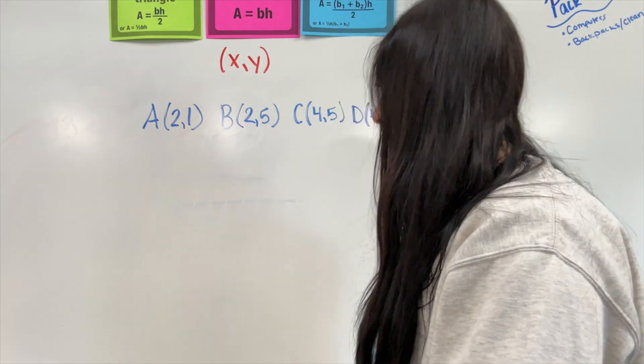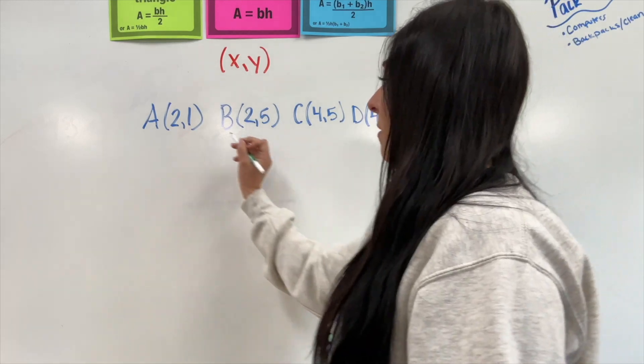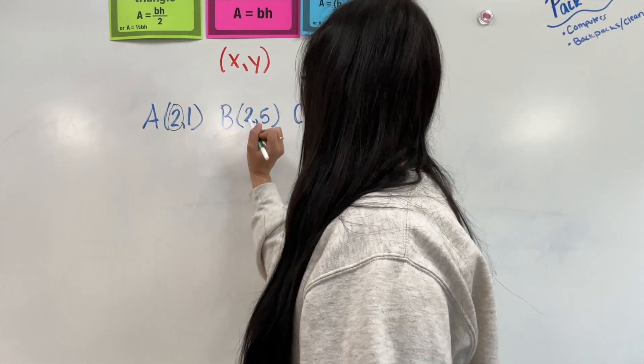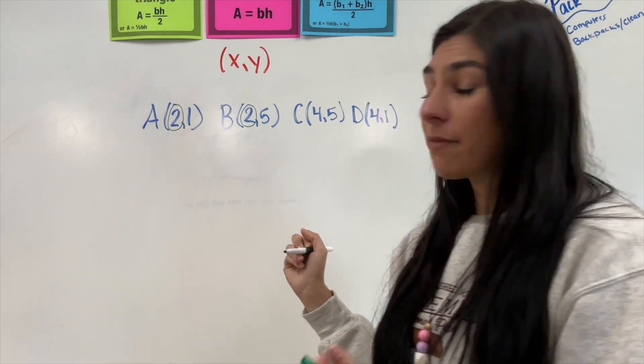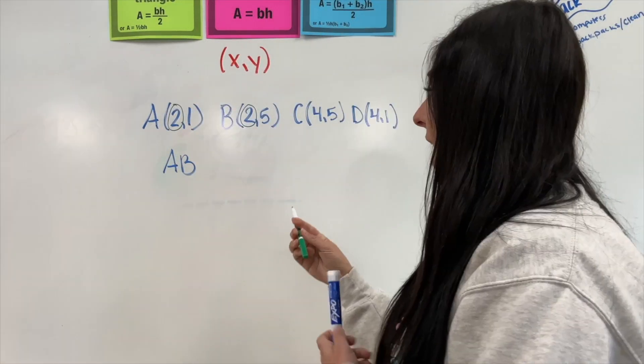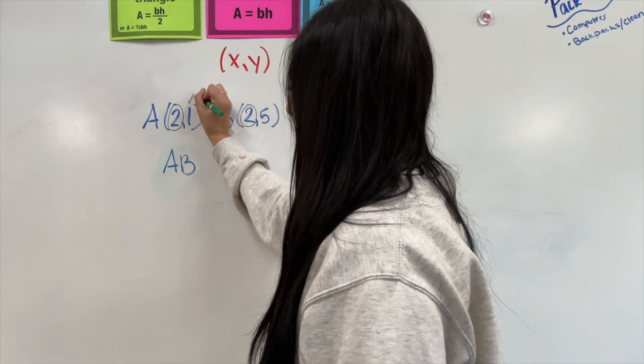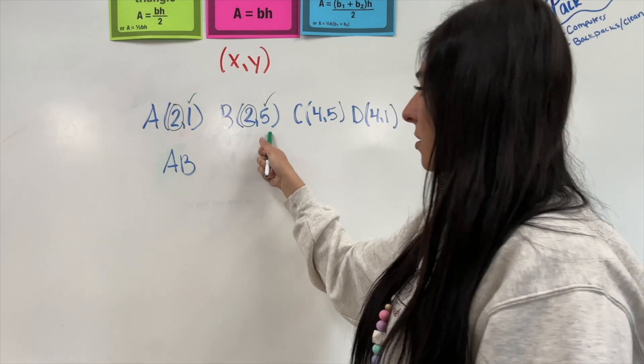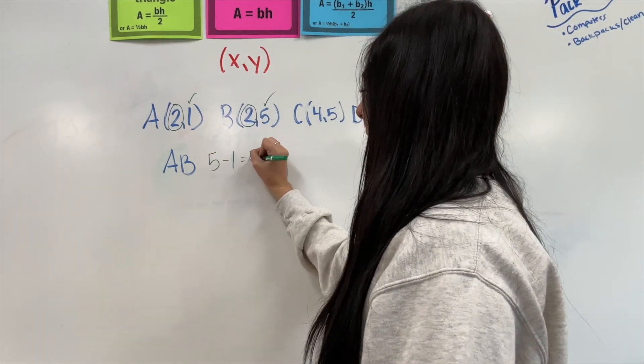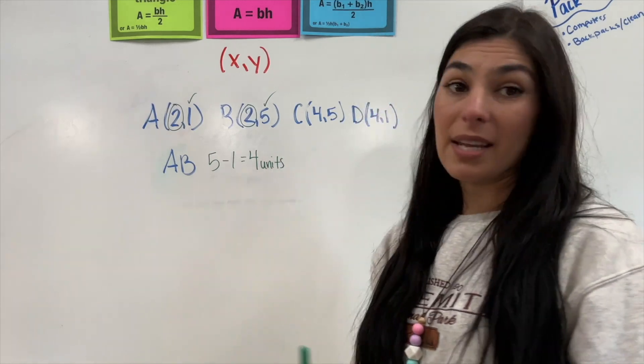So, let's go ahead and see which ones have the X's that match. Right off the bat, I see that A and B both have two that matches their X. I have A and B. And then I'm going to go ahead and subtract the ones that don't match. So, I'm looking at these two, five and one. That equals four. So, that means that has a four unit difference.